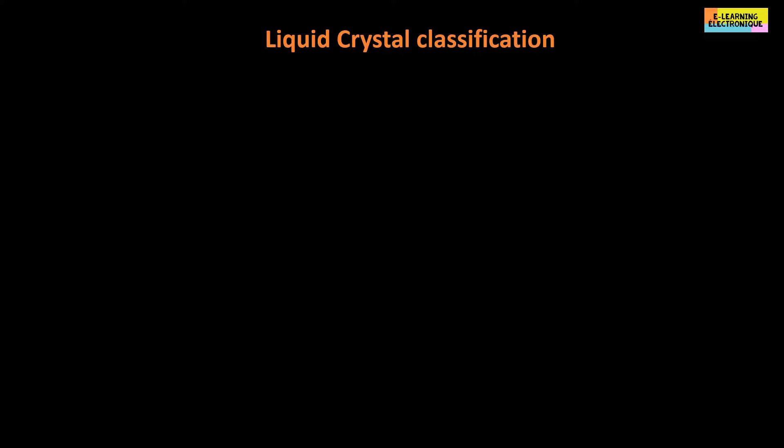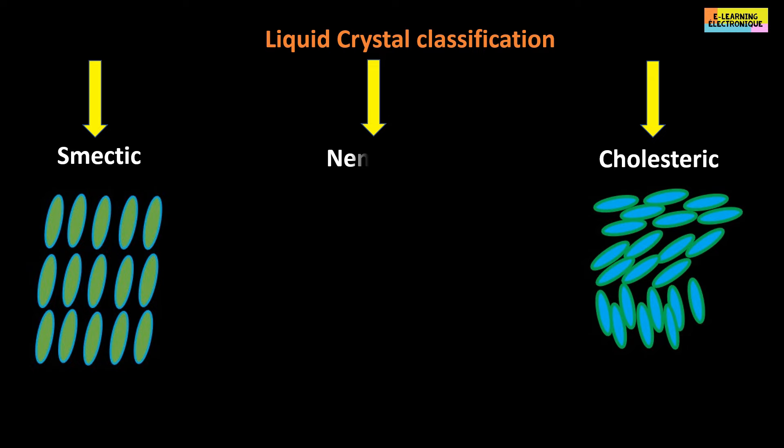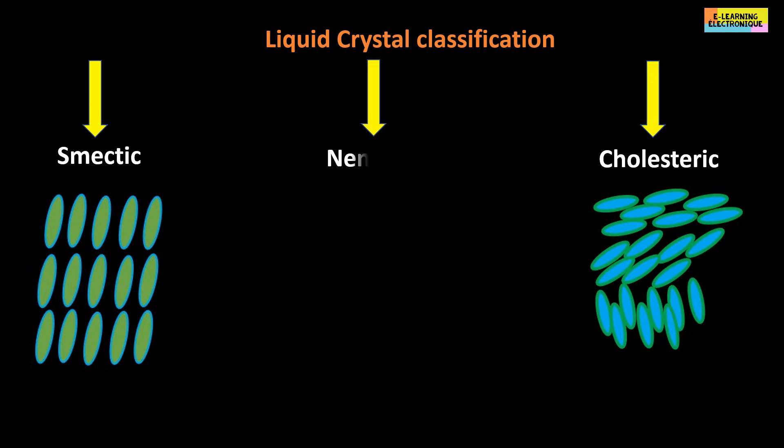Liquid crystals are classified according to the orientation and arrangement of the molecules. We distinguish three classes: the smectics, where the molecules are arranged in parallel layers; the cholesteric, where the molecules are arranged in the form of a helix; and the nematic, where the molecules are oriented in the same direction without forming layers.